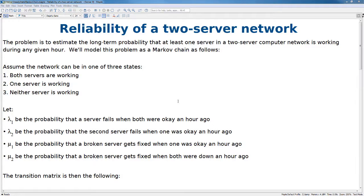Let's see how this all works with an example. In this example, we're talking about the reliability of a two-server network. The problem is to estimate the long-term probability that at least one server in a two-server computer network is working during any given hour. We'll model this problem as a Markov chain. We assume that the network can be in one of three states: one, both servers are working; two, one server is working; or three, neither server is working.